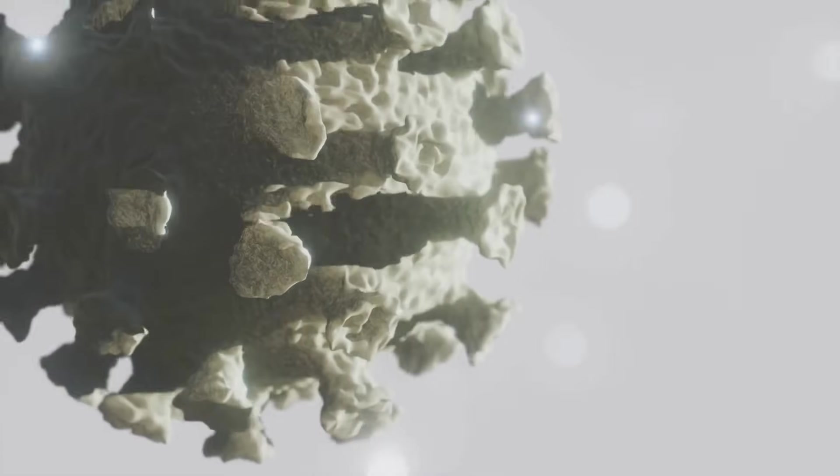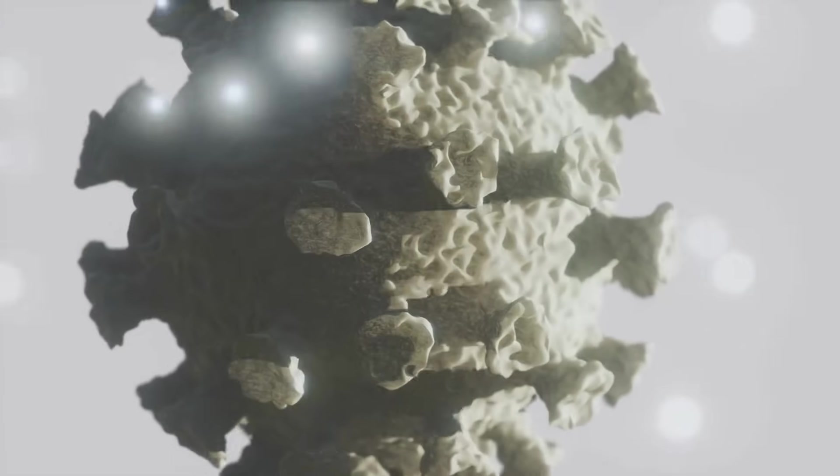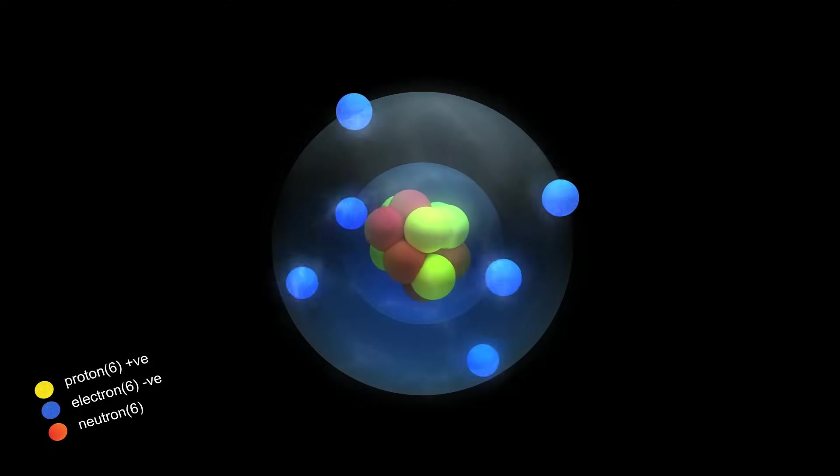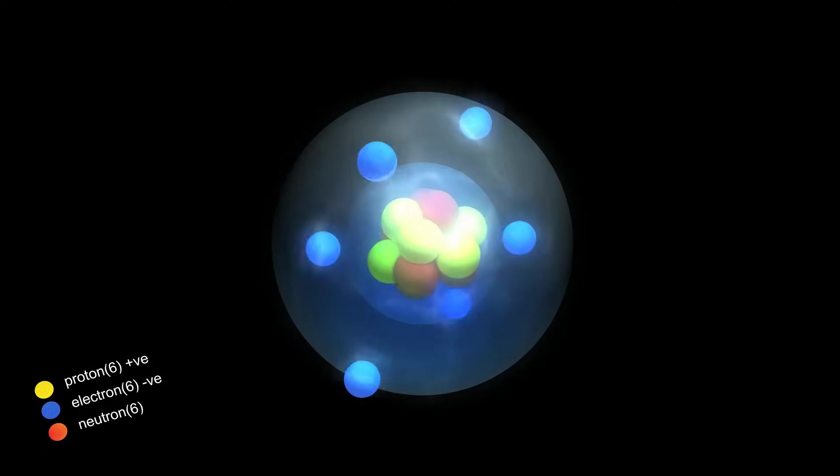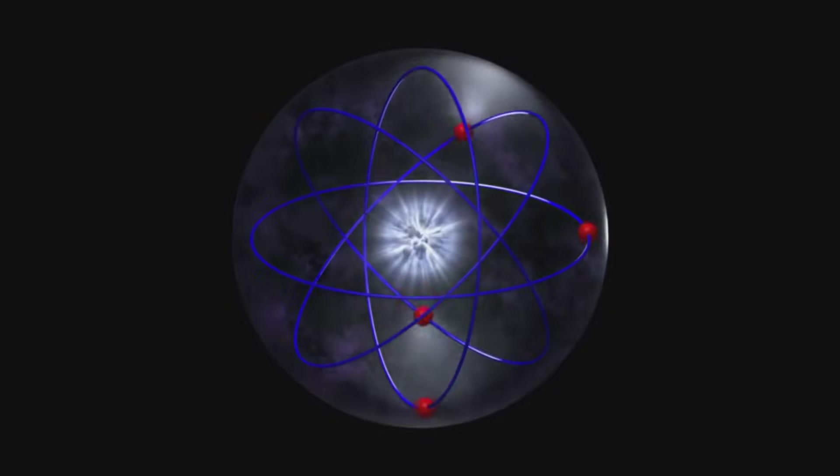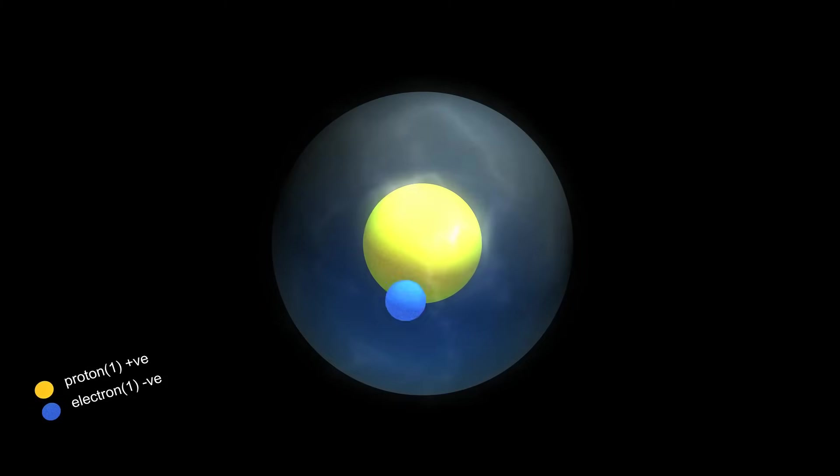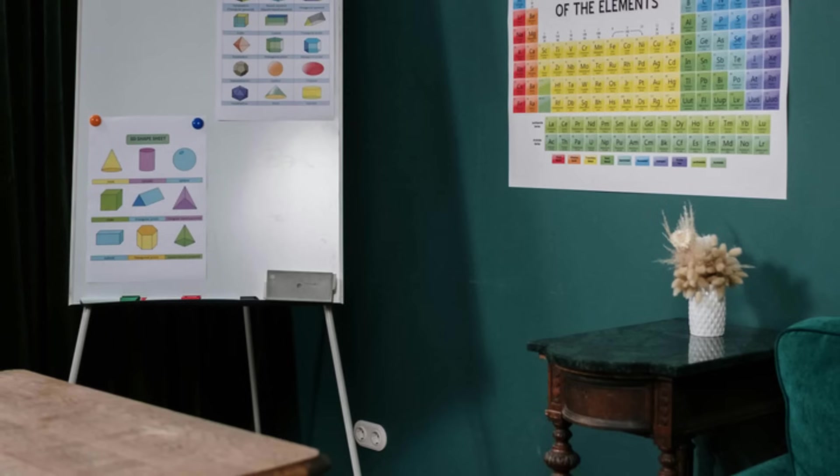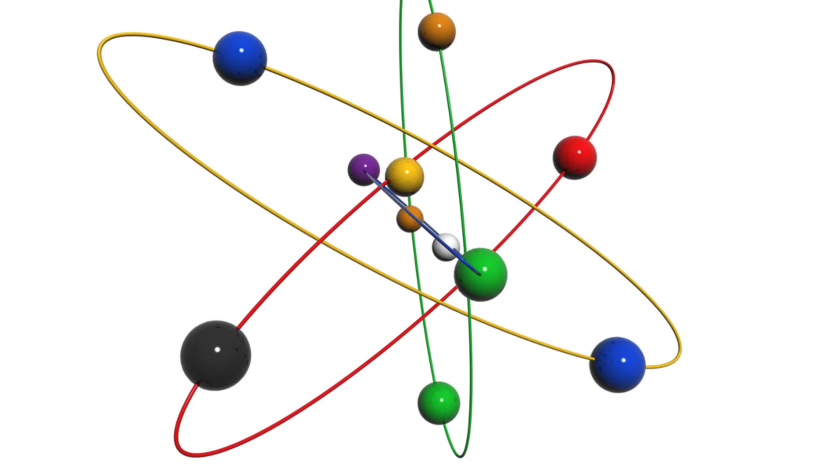Inside each atom is a nucleus packed with protons and neutrons with electrons whizzing around it. Protons are positive, neutrons are neutral, and electrons are negative. The number of protons determines the element: 1 for hydrogen, 6 for carbon, 8 for oxygen.